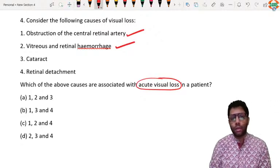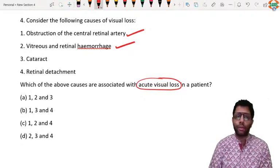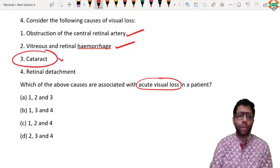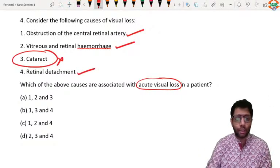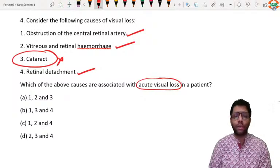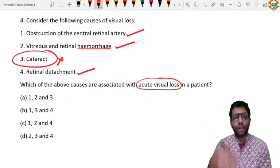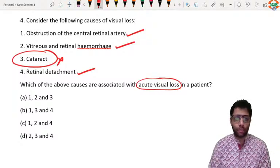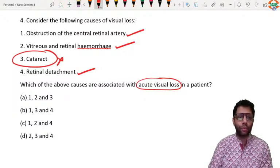Cataract of course cannot be the answer over here, that is the gradual painless most common cause. And even some retinal detachment like rhegmatogenous detachment can be acute sudden painless vision loss, like rhegmatogenous detachment following by floaters, flashes, field defect and sudden painless vision loss. Even exudative detachment can be sudden painless vision loss. Answer has to be 1, 2 and 4.